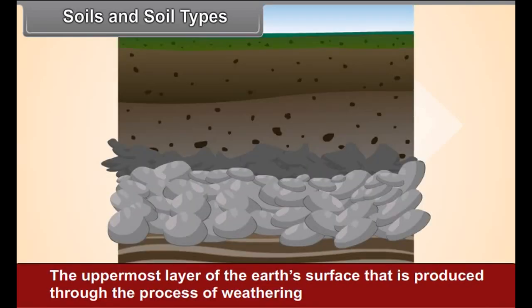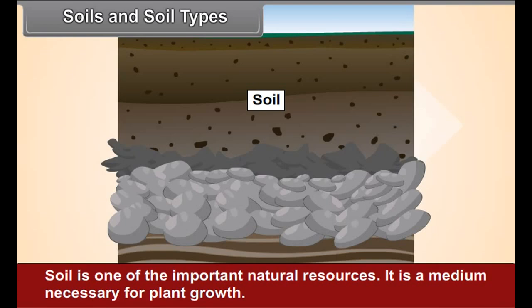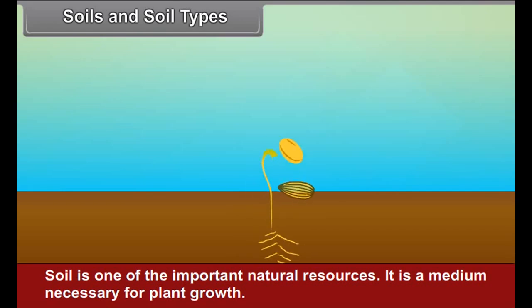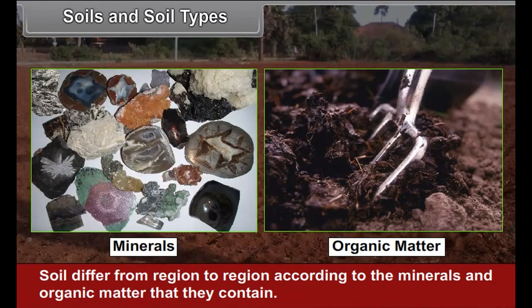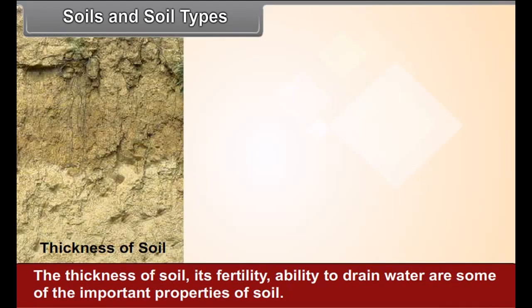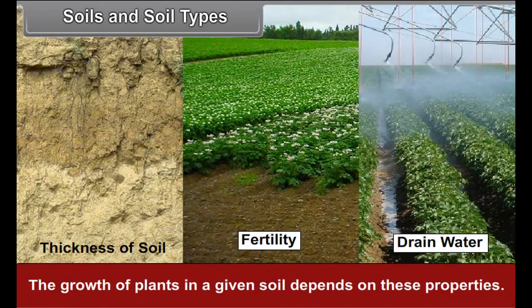Soil and Soil Types. The uppermost layer of the earth's surface that is produced through the process of weathering and contains some biotic material is called soil. Soil is one of the important natural resources and is a medium necessary for plant growth. Soils differ from region to region according to the minerals and organic matter they contain. The thickness of soil, its fertility, and ability to drain water are some of the important properties of soil, and the growth of plants in a given soil depends on these properties.